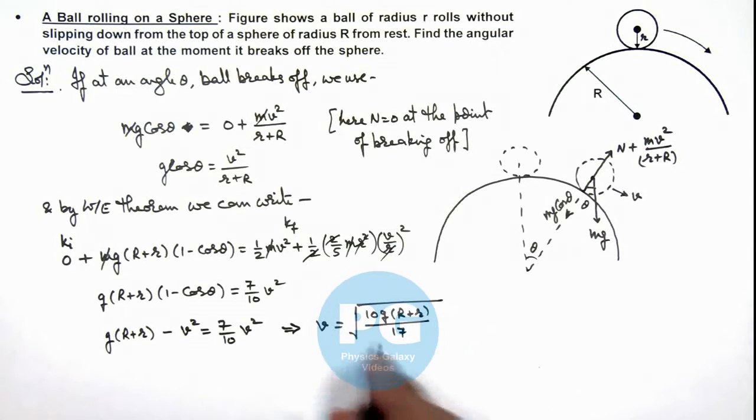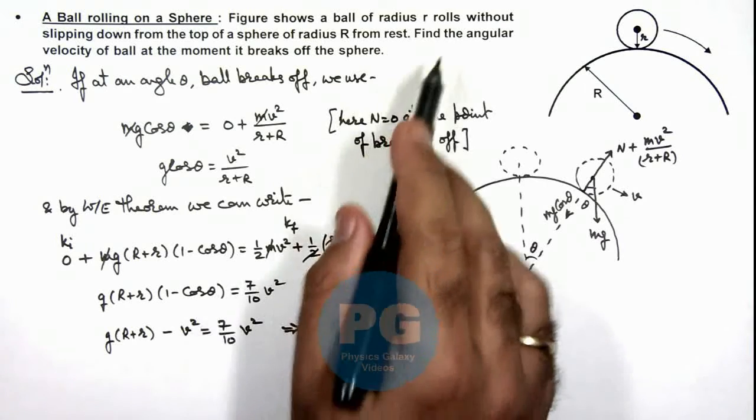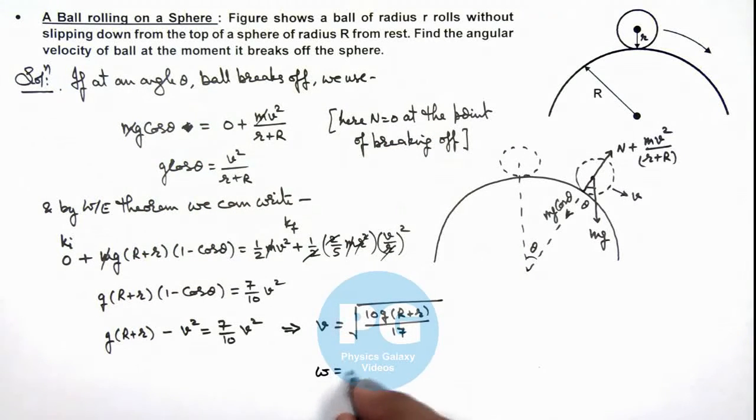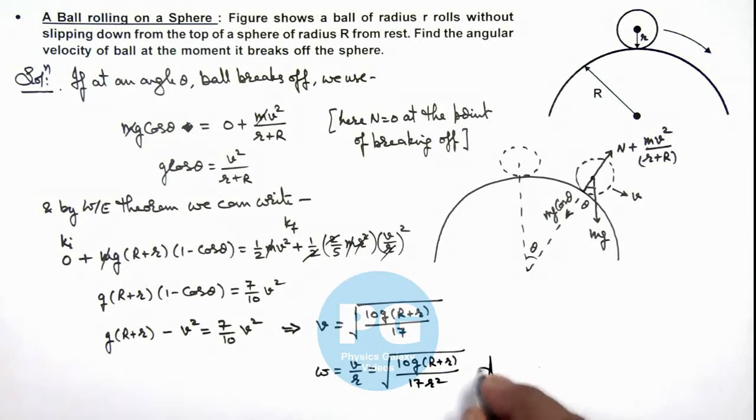As we have got the value of v, we are required to find the angular velocity of the ball at the moment it breaks off. So the value of omega we can write as v/r. This will be given as the square root of 10g(R+r)/(17r²). That is the result of this problem.